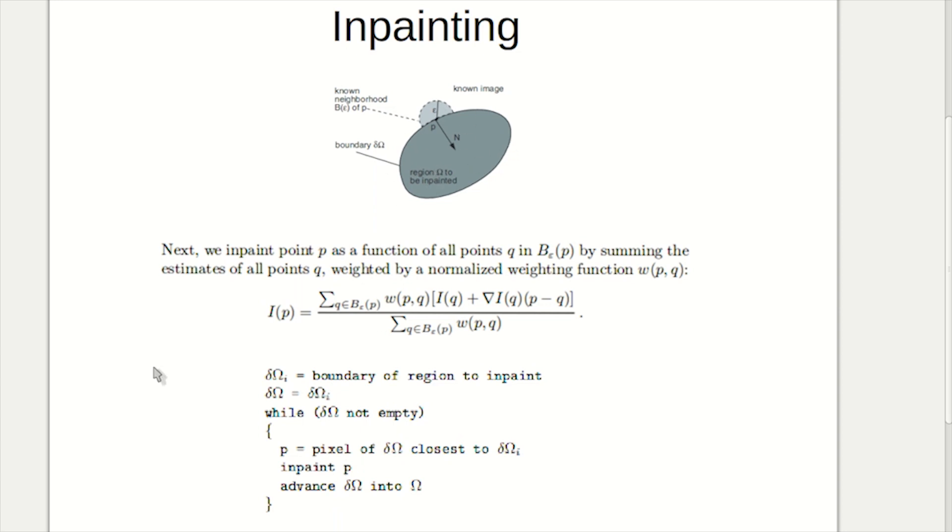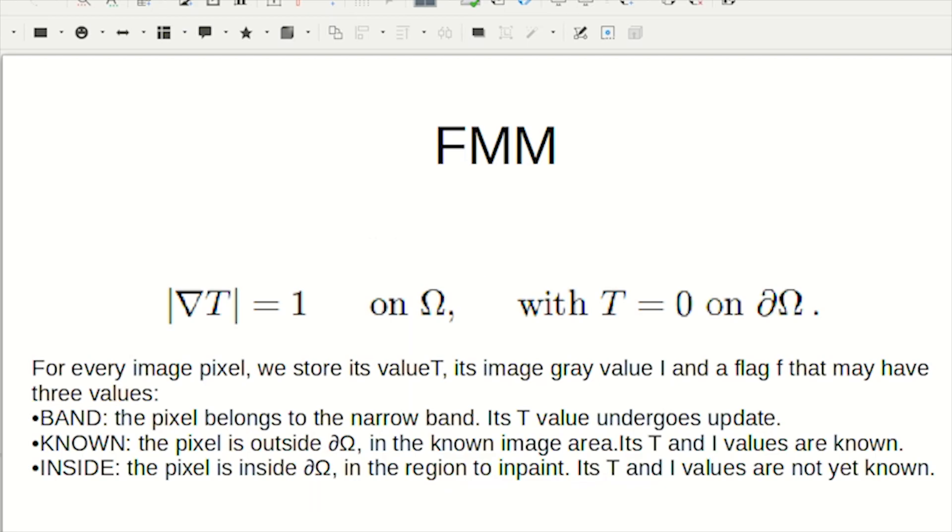Now let's see the significance of FMM in inpainting. We inpaint pixels in increasing distance from ∂Ω's initial position and advance the boundary inside Omega until the whole region is inpainted. Inpainting in increasing distance order ensures that areas closest to the image are filled in first, which is similar to how we actually paint.